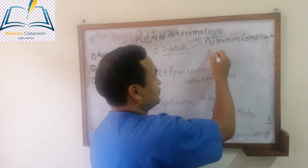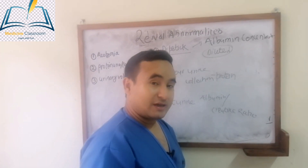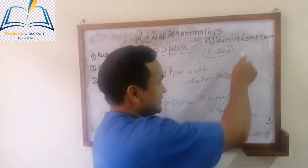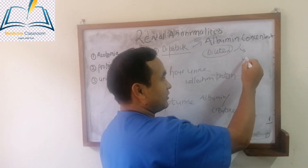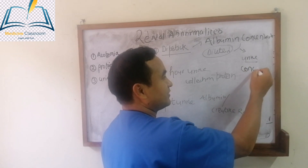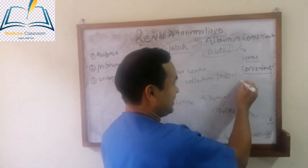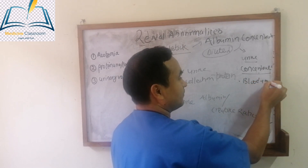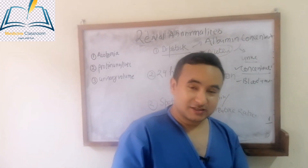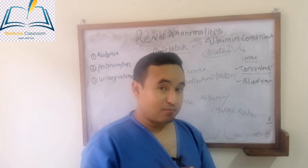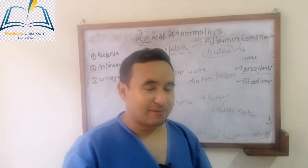If your urine is diluted, the dipstick can underestimate the albumin present in the urine. Conversely, if your urine is concentrated, it can show a high value, or if blood is mixed with the urine, it can give a false positive for albuminuria. So the dipstick is not reliable in these scenarios, and we need to quantify the protein present in the urine.